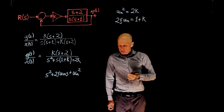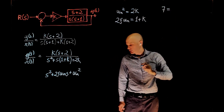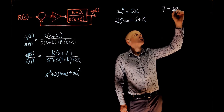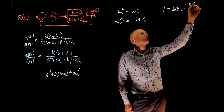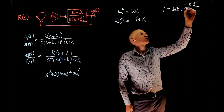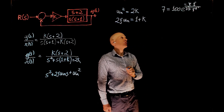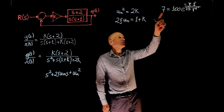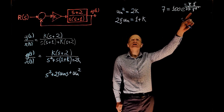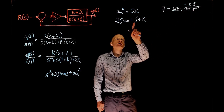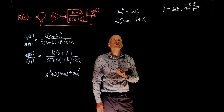The desired percent overshoot is 7%, so 7 equals 100 times e^(−πζ / √(1 − ζ²)). This is the percent overshoot we want. From this expression, we can find ζ, and by replacing ζ in our earlier equations, we should be able to solve for k, since that's the only remaining variable.